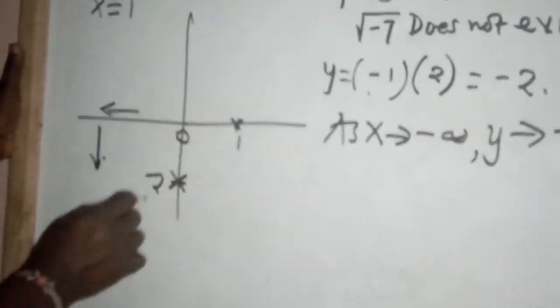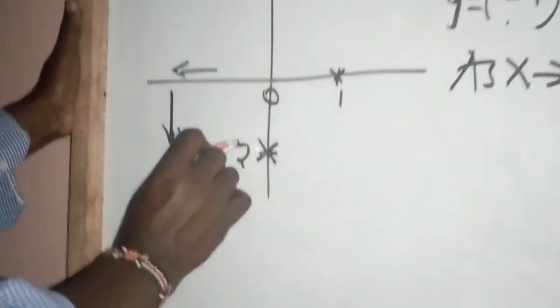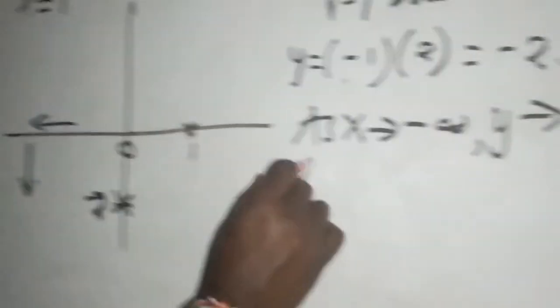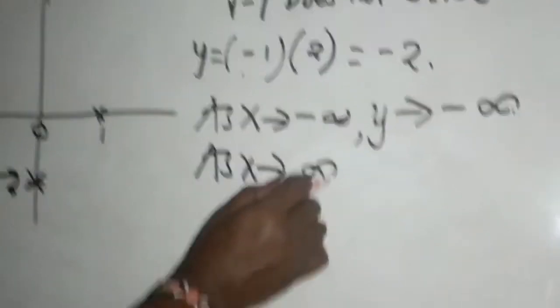As x tended to be zero, we found that y is simply negative two. As x tended or approached positive infinity, y approached what?